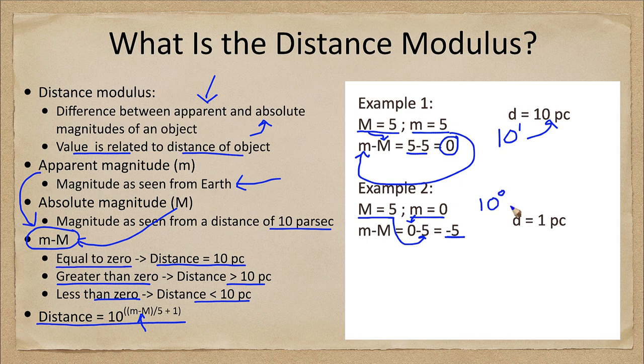And negative 1 plus 1 gives us 0, so we would get 10 to the 0 power. Any number to the 0 power is equal to 1, so this star would then be 1 parsec away.